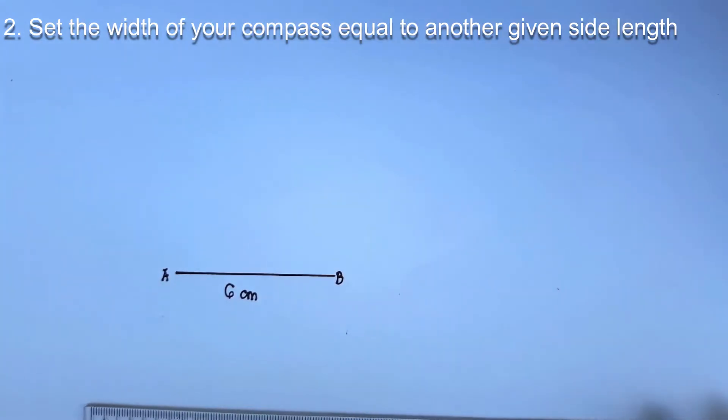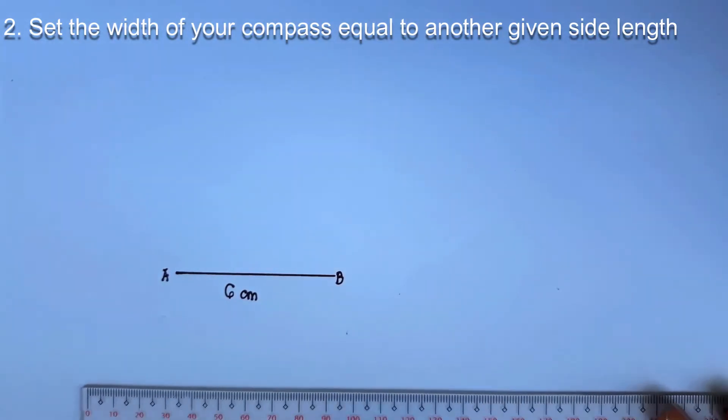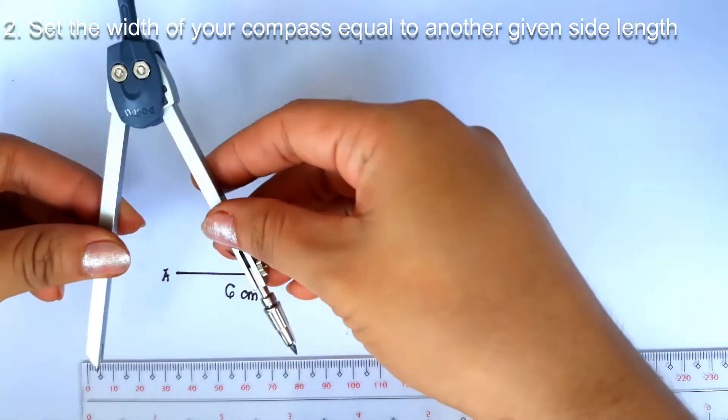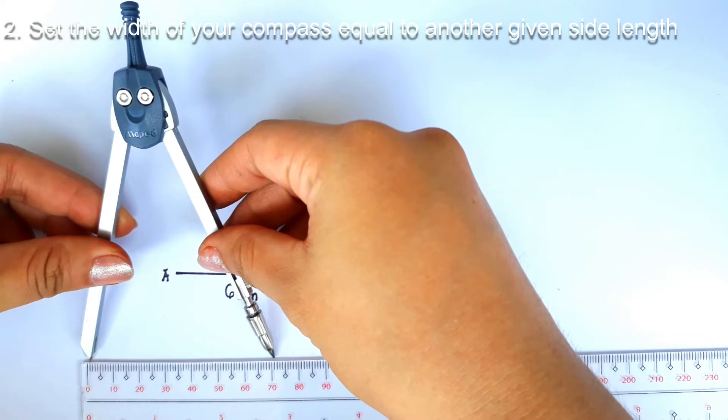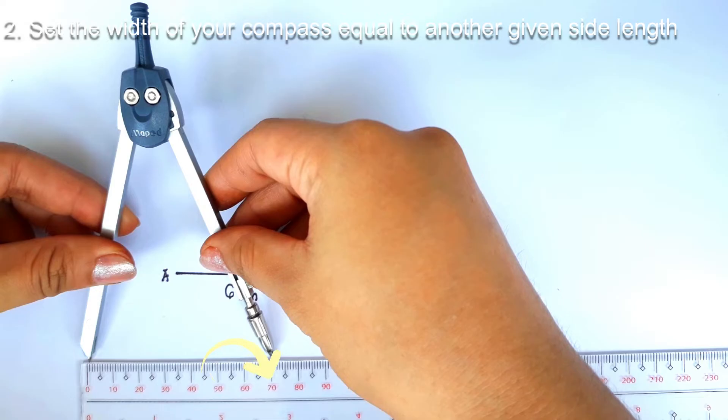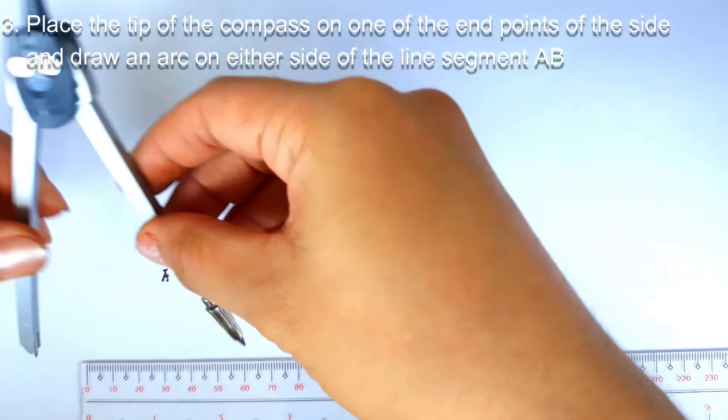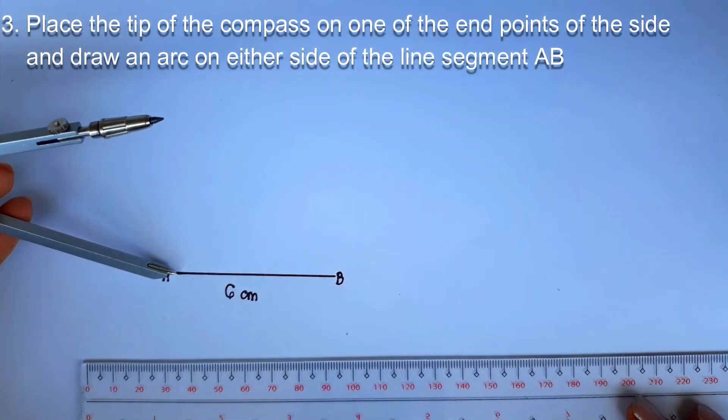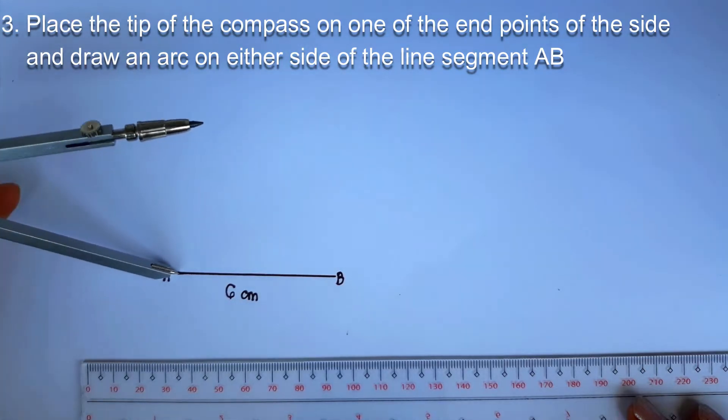Number 2. Set the width of your compass equal to another given side length. Let's set it equal to 7 centimeters. Retain this width for the next step. Number 3. Place the tip of the compass on one of the endpoints of the side A and B. Let's choose to place it on A.